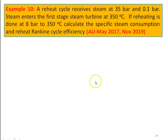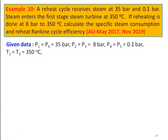Example number 10, from the university question paper May 2017 and November 2019: A reheat cycle receives steam at 35 bar and condenser pressure 0.1 bar. Steam enters the first stage turbine at 350°C. Reheating is done at 8 bar to 350°C. Calculate specific steam consumption and reheat Rankine cycle efficiency. Given data: P1 = P6 = 35 bar, P2 = P3 = 8 bar (reheat pressure), P4 = P5 = 0.1 bar (condenser pressure), T1 = T3 = 350°C.